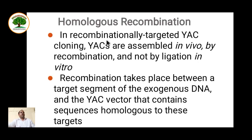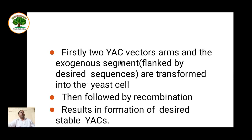In recombinationally targeted YAC cloning, YACs are assembled in vivo by recombination, not by ligation. Homologous recombination procedures are used: recombination takes place between the target segment of exogenous DNA and the YAC vector that contains sequences homologous to this target. Under certain cloning conditions, two YAC vector arms and the exogenous segment flanked by desired sequences are transformed into the host cell, followed by natural recombination. This results in the formation of a desired stable YAC — by natural formation it is more stable.